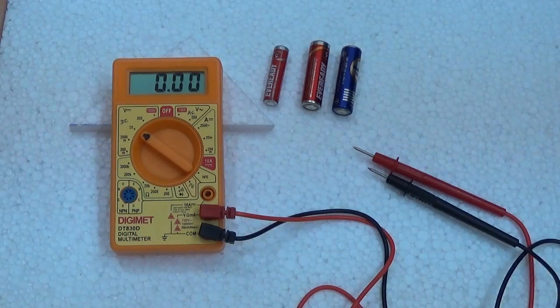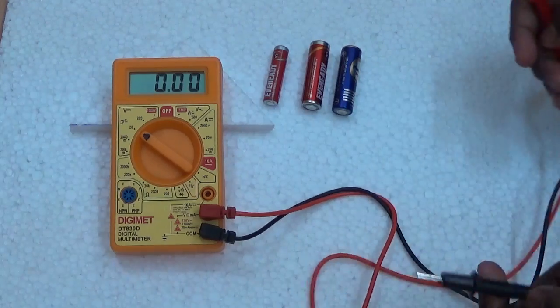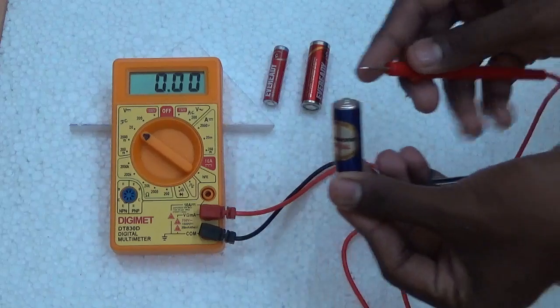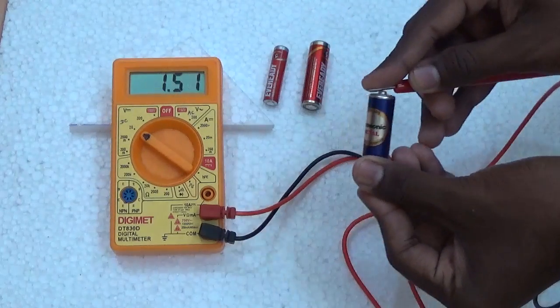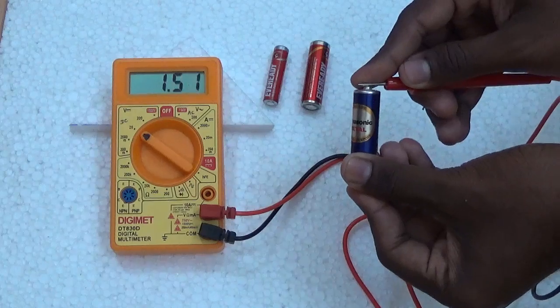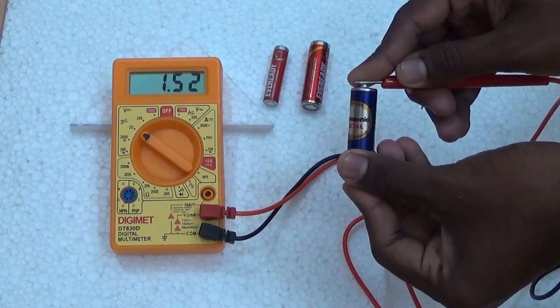Now take the test probes and a battery. This is the negative pole and this is the positive pole. See the result. If the reading has more than 1.3 volts, then the battery still has life and usage. This is a good battery.